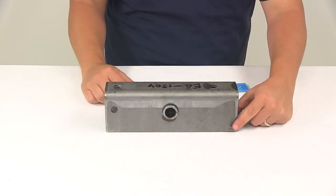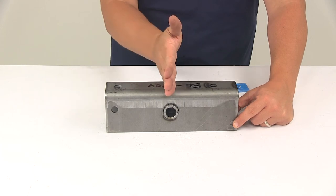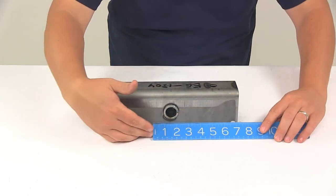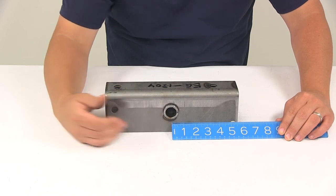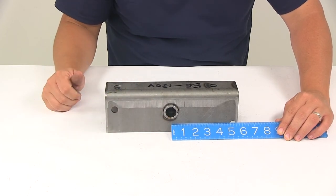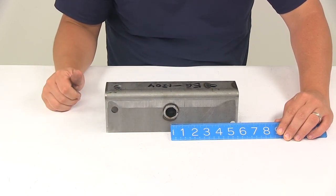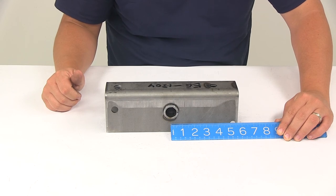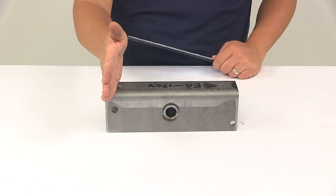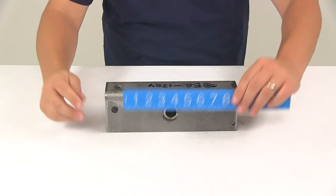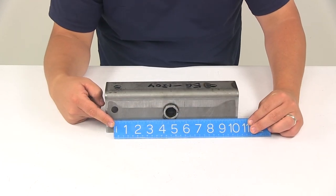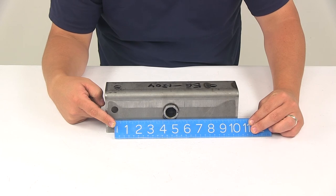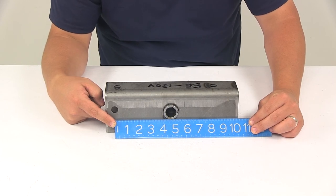From the center of the three eighths of an inch diameter hole to the center of the center hole, that's going to give us a measurement of around five and three eighths of an inch. From the center of the nine sixteenths inch diameter hole to the center of the center hole, that's going to be about four and five eighths of an inch.